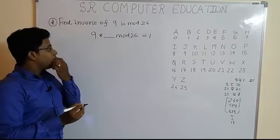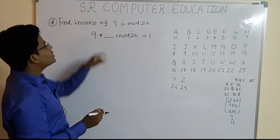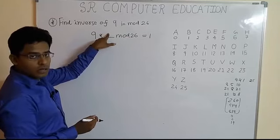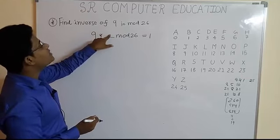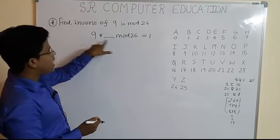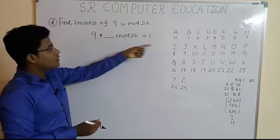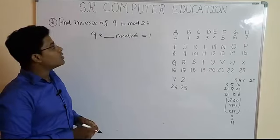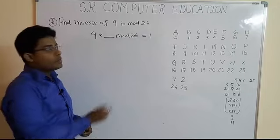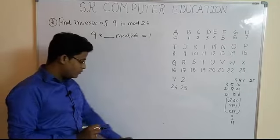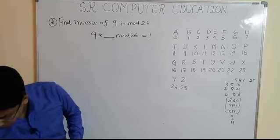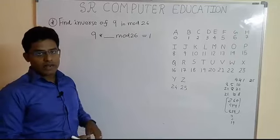Now, you have to determine what value you will put here so that multiplying that value with number 9 and taking the mod 26 of this number, you will get 1. So, if you get answer 1, then that number is the inverse of 9 in mod 26.